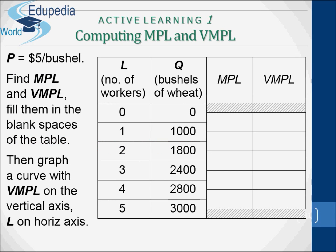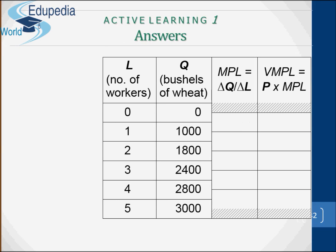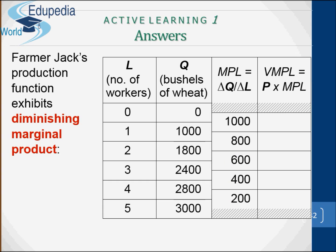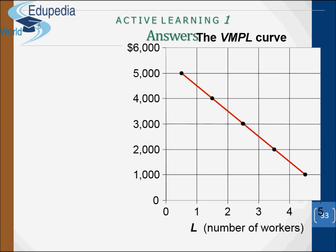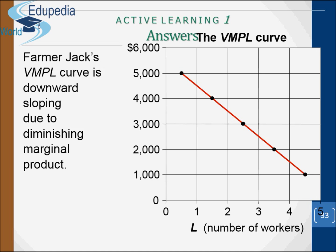Let's compute MPL and VMPL: fill in the blank spaces of the table and graph a curve with VMPL on the vertical axis and L on the horizontal axis. Farmer Jack's production function exhibits diminishing marginal product — MPL falls as L increases. The VMPL curve is downward sloping due to diminishing marginal product.